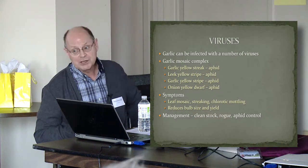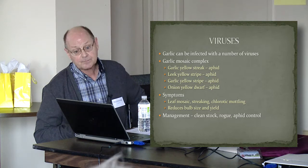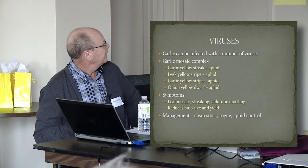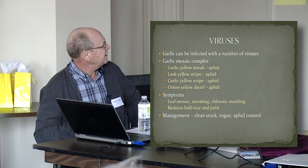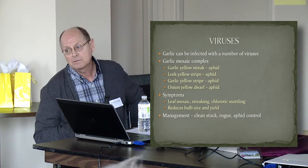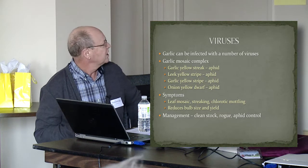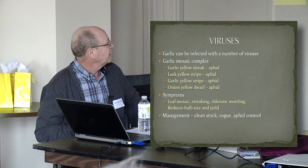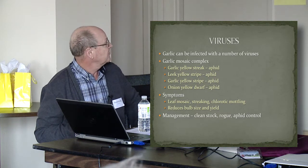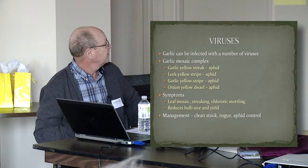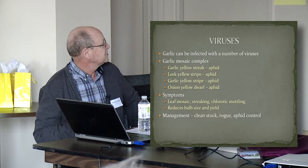Viruses reduce yields and they cause leaf mosaics, yellowing, chlorotic conditions of the foliage, and streaking. As mentioned, it reduces yield and reduces bulb size.